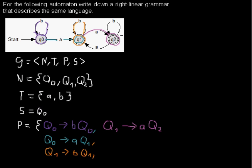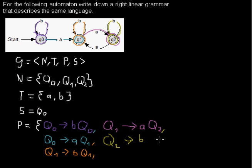The next arc is where we are in q2, reading a b, and again moving to q2. So we generate b as an input symbol and stay in q2, giving the rule q2 → b q2. As you can see, the automaton consumes input symbols while the grammar generates them, but they both describe the same language.